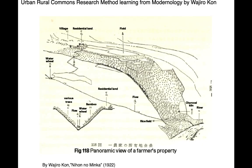In this context, our urban-rural commons studies are based on the research methodology of Japanese ethnographer Wajirao Kon, who wrote about the Japanese farmhouse Minka in 1922. Kon studied the relationship between farmers' households, land use, agricultural business, and the form of Minka, attempting to capture the changes of modernization.